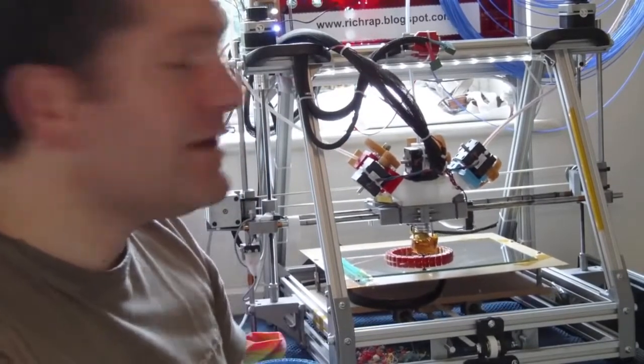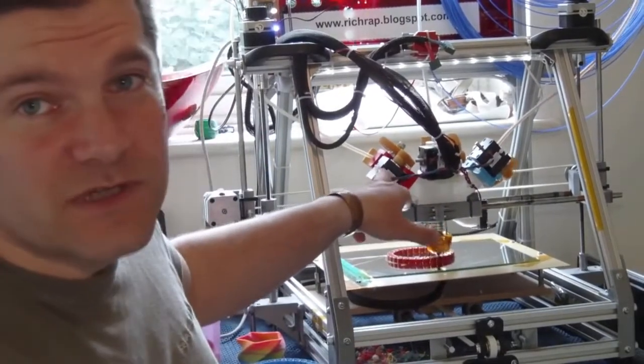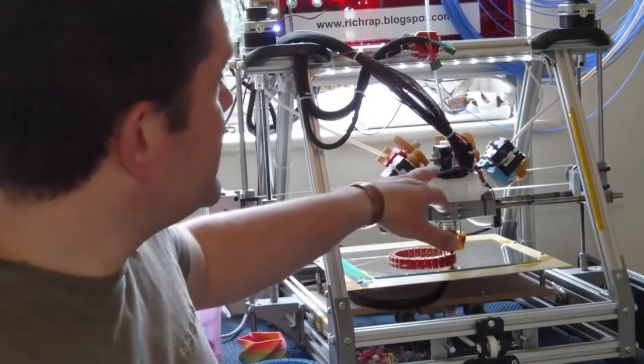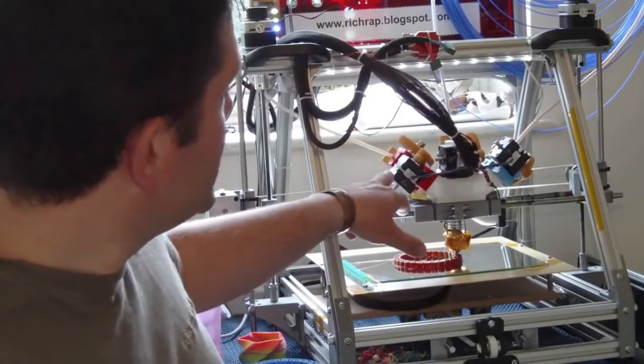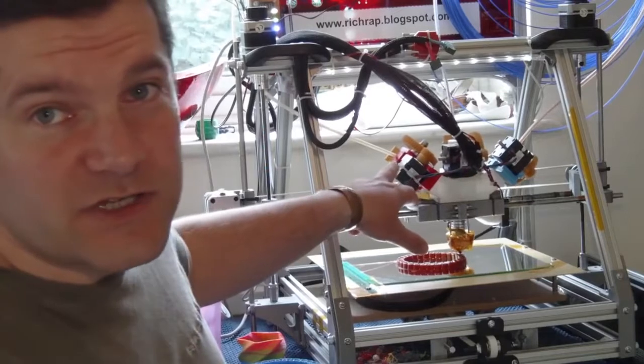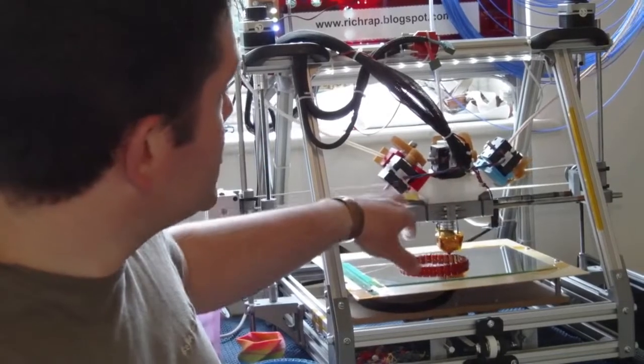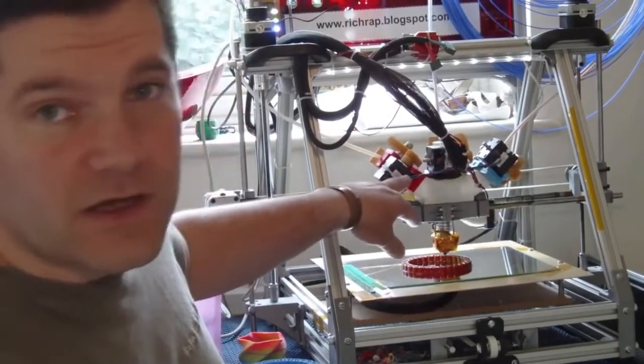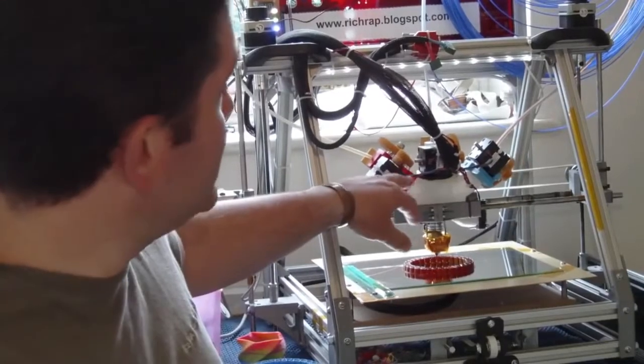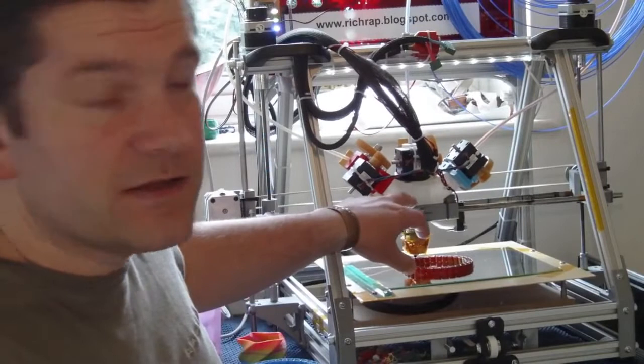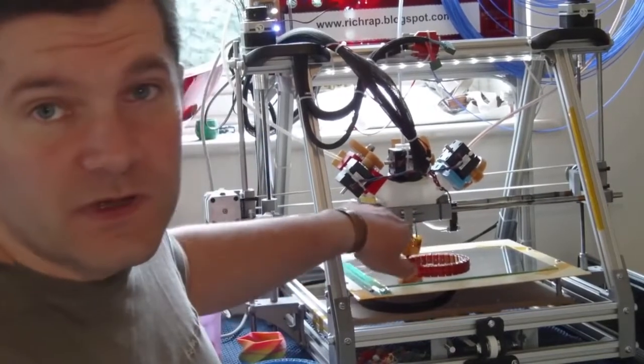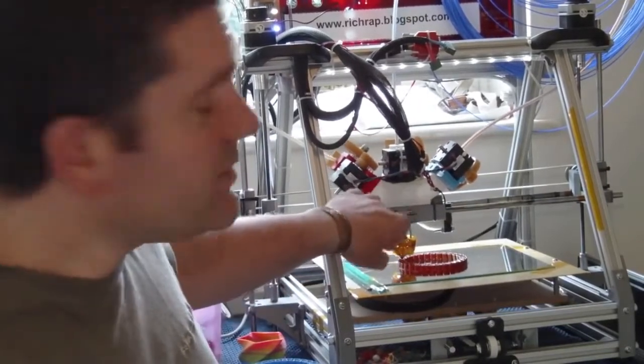So what we've got here, we've got three separate NEMA 14 motor extruders with herringbone gears, and they're all connected individually so they can be each individually controlled. And they're all forcing the filament into a single hotend. So that's doing the blending and pushing out the final filament.